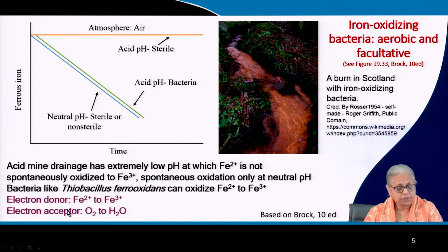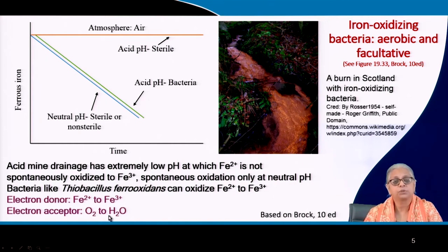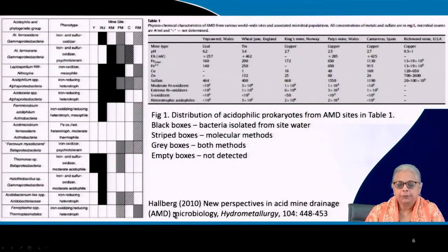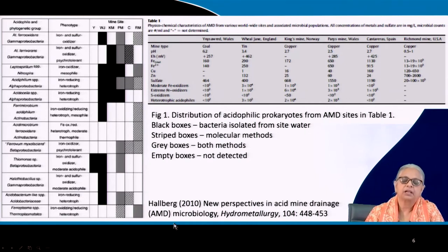The electron donor in these reactions is ferrous iron, which is converted to ferric iron, and the electron acceptor is oxygen — making it an autotrophic reaction. A review paper discusses acid mine drainage and the microbes associated with it.